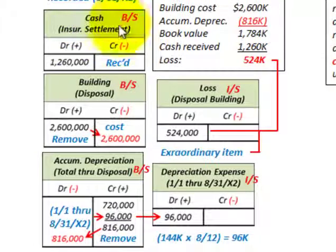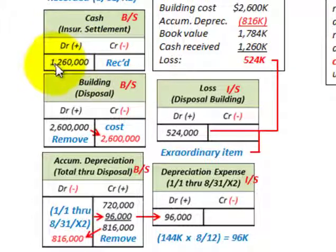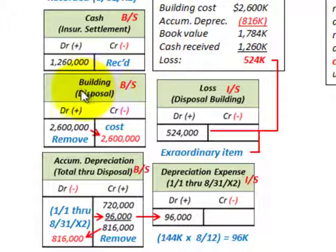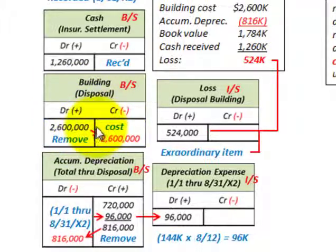The first entry is cash from the insurance settlement — cash we received of $1,260,000. Next, we remove the building off the books because we lost it in the fire. The building was sitting on the books at $2,600,000 (its original cost), so we credit that out for $2,600,000 to remove it.